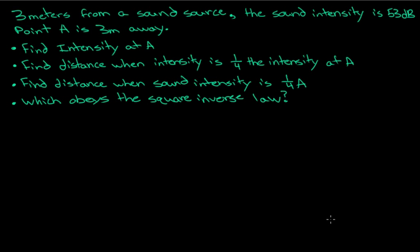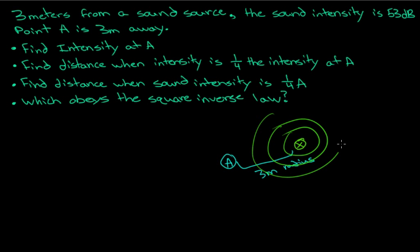In the previous video, I talked about the difference between intensity and sound intensity, and in this video I want to go over an example. This example question regards sound intensity: 3 meters away from a sound source, we have point A at a distance of 3 meters — our radius — and because it is emitting in all directions, we need to find the intensity at A, knowing that the sound intensity at point A is 53 decibels.